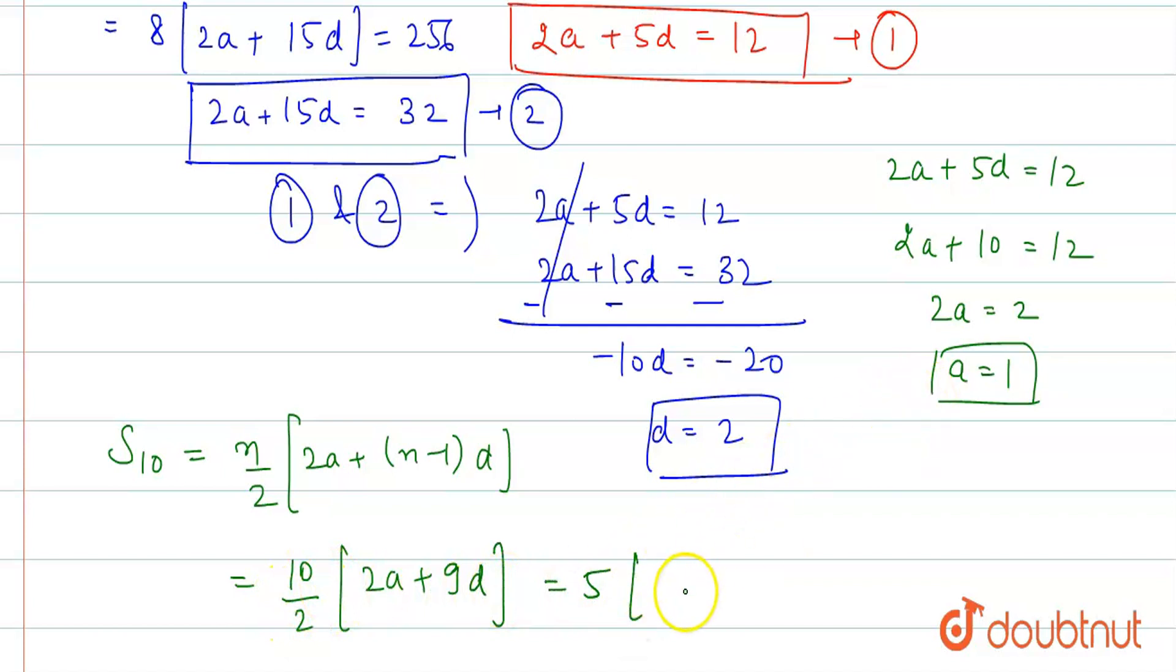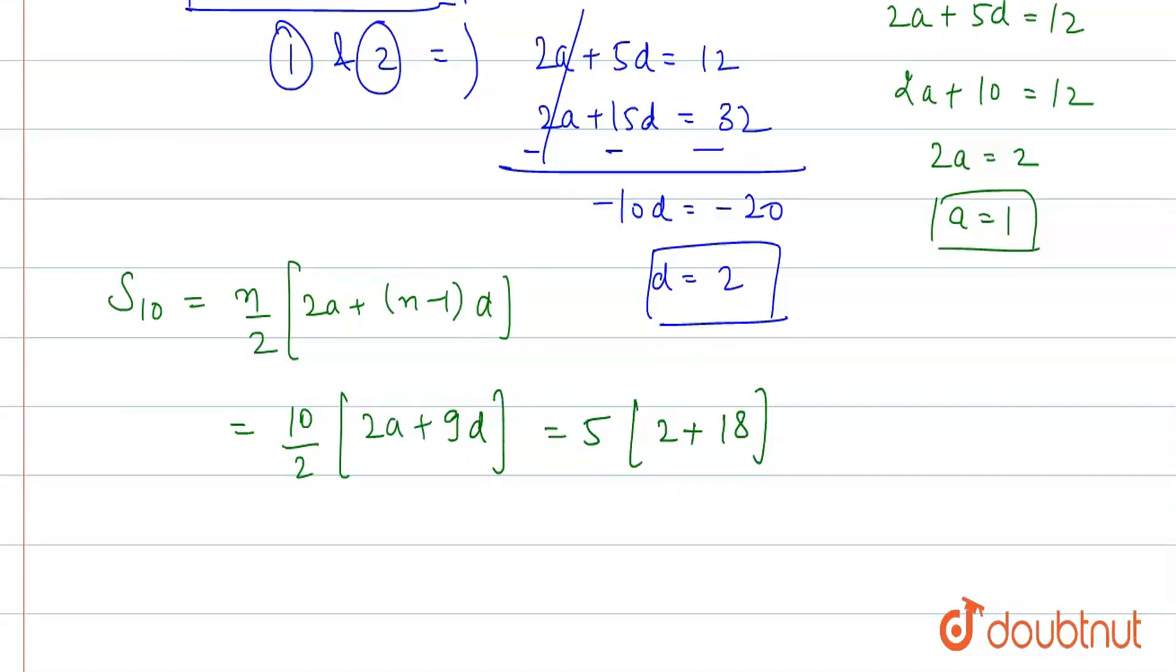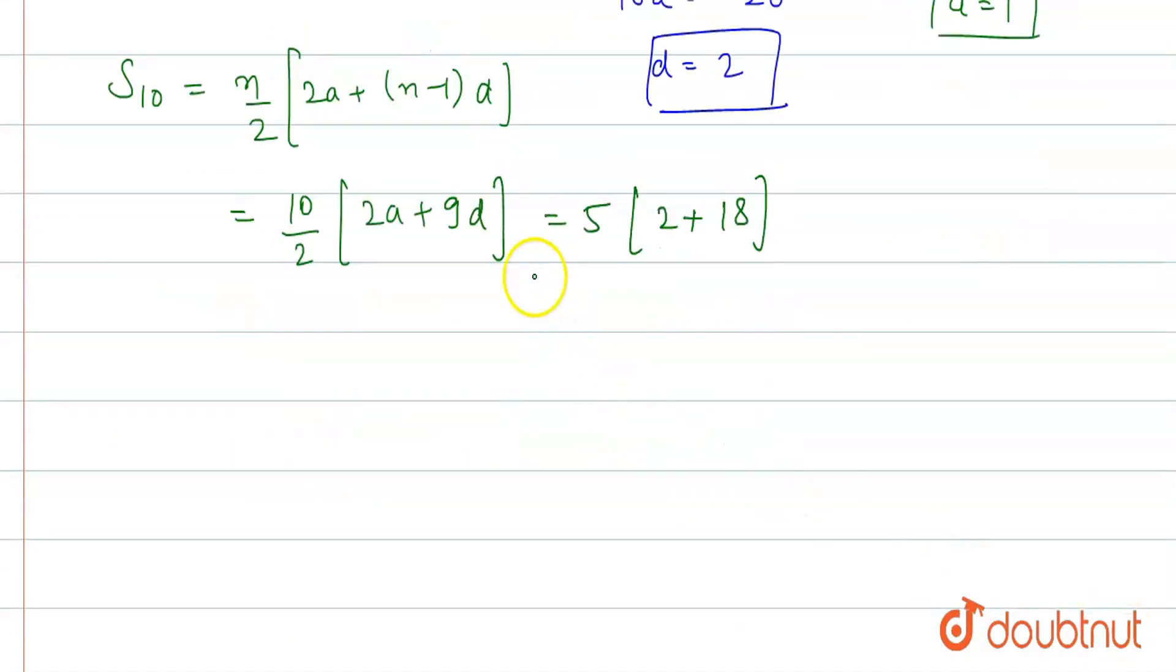This equals 5 times 2 plus 18. Since a value is 1, we have 5 times 2 plus 18, which equals 5 times 20, equals 100. So S10 equals 100. And 100 is our answer. Thank you.